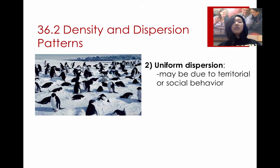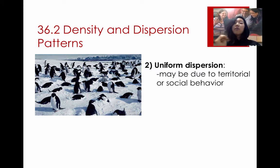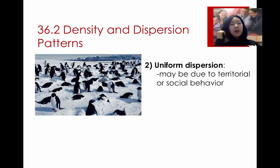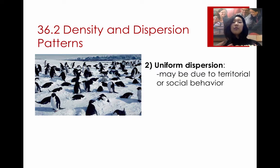Uniform dispersion is a different form of dispersion where there is relatively equal spacing between all of the individuals. This kind of pattern tends to be seen in social or territorial behavior. It can also be seen in plants that may create chemicals to keep the plants separated from each other.